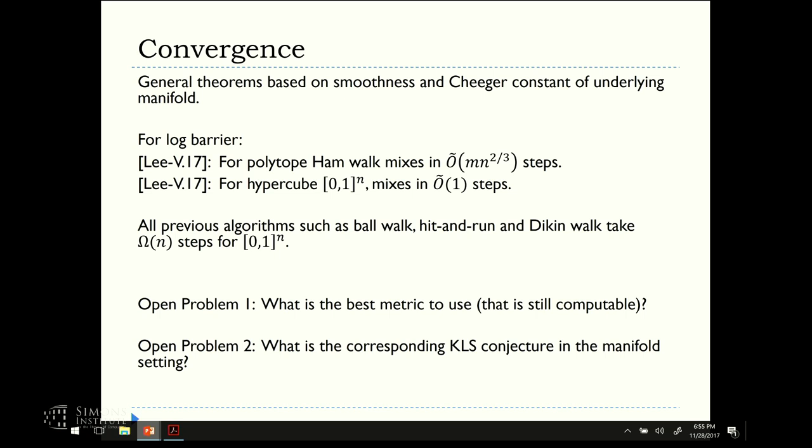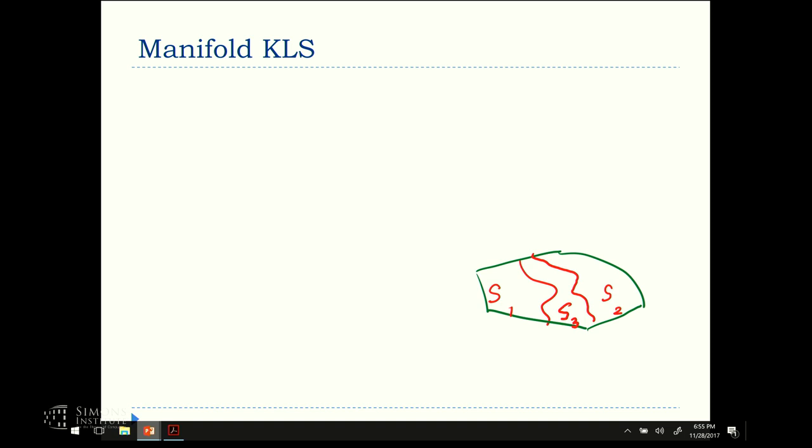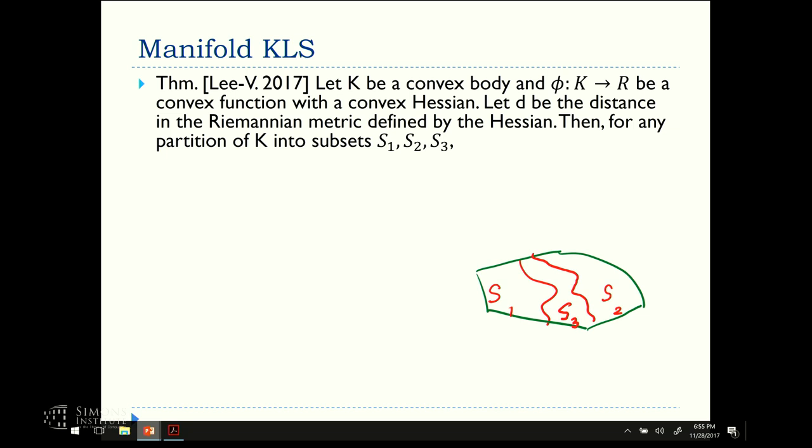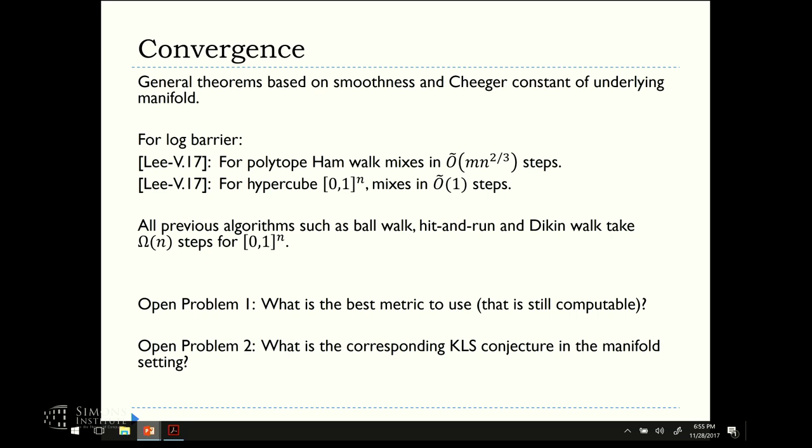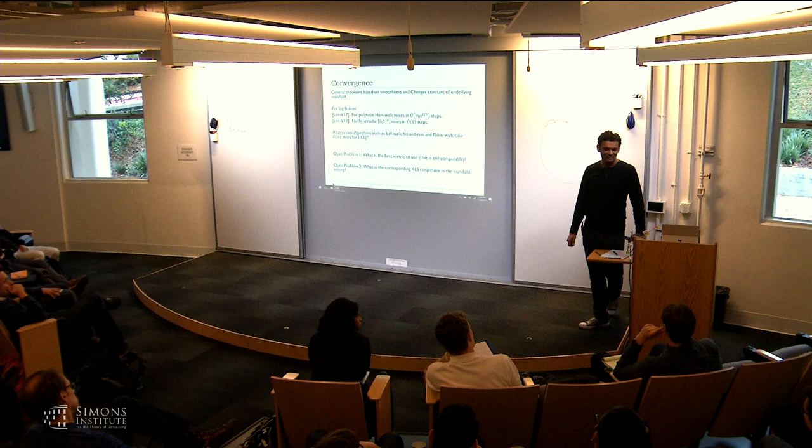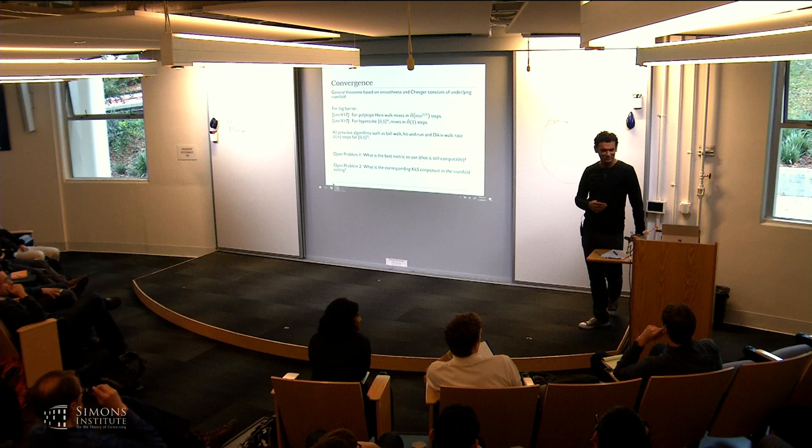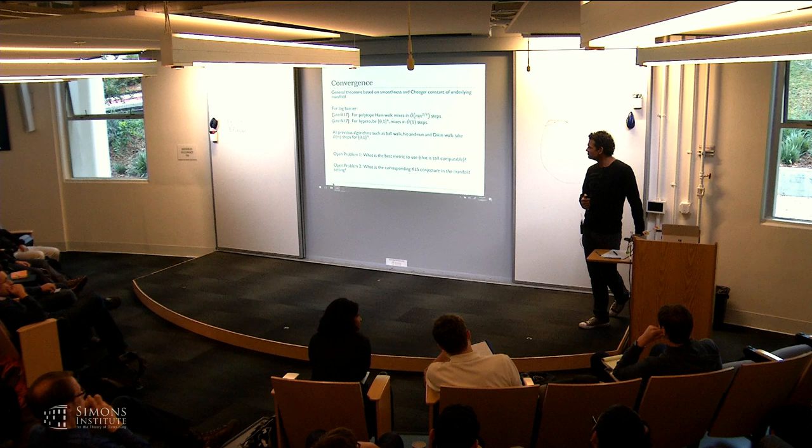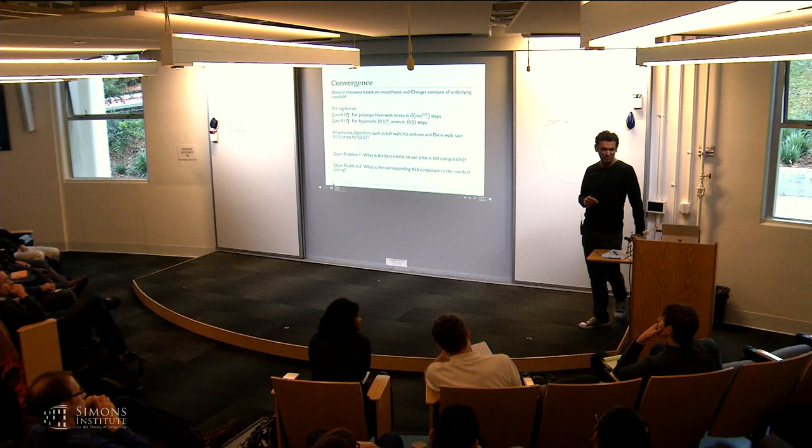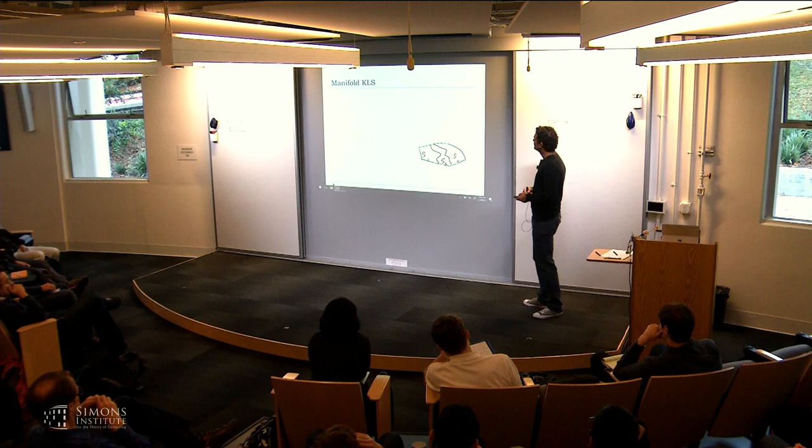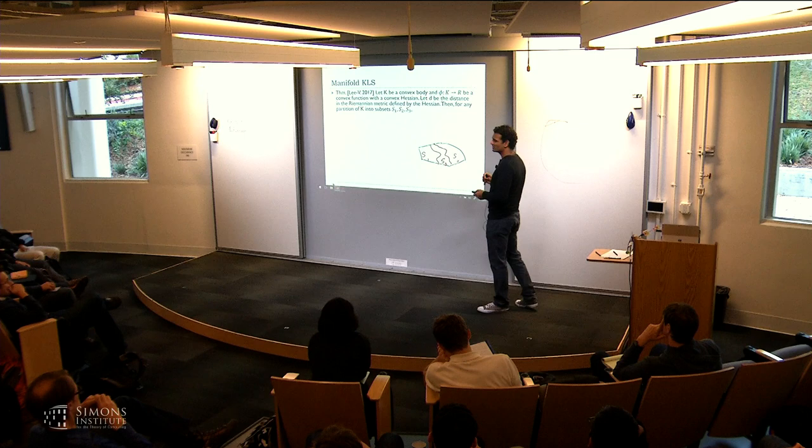Then another question which we'll elaborate on in the remaining time is what's the corresponding isoperimetric conjecture in this manifold setting? So, what we can prove and this is the core of how we get the sampling theorems. Does it make sense to ask the first question without that is still computable? Yes, exactly. That's why I put it in parentheses. Suppose I don't worry about one-step computation complexity. Still, it's interesting to know what's the optimal metric. I mean, somebody told me that Einstein color is a very good one, but I don't yet know what it means to be optimal. Yeah, it would be nice. So, I think even for theoretical purposes, even knowing what's the rate without worrying about implementation would be interesting.